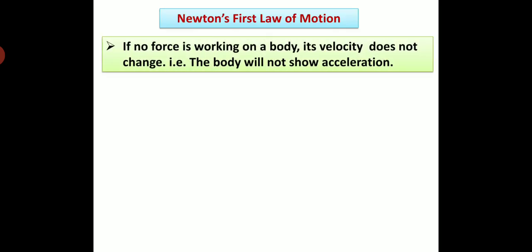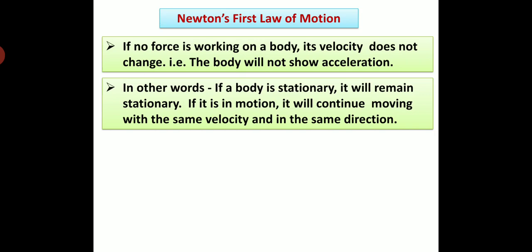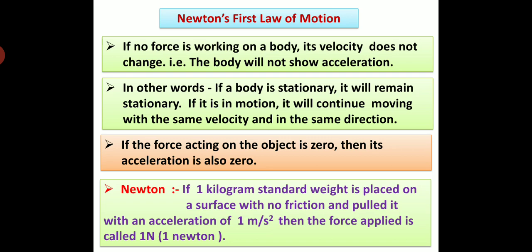Newton's First Law of Motion: If no force is working on a body, its velocity does not change — meaning the body will not show acceleration. In other words, if a body is stationary, it will remain stationary; and if it is in motion, it will continue moving with the same velocity and in the same direction. If the force acting on the object is zero, then its acceleration is also zero. One Newton is defined as: if a one-kilogram standard weight is placed on a frictionless surface and pulled with an acceleration of one meter per second squared, the force applied is called one Newton.